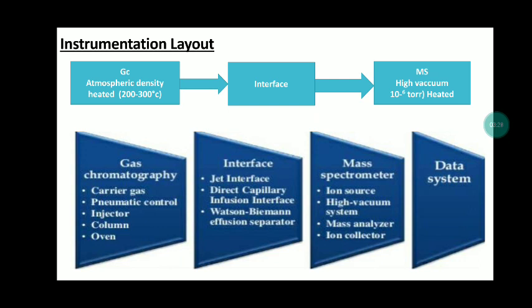Instrumentation of GCMS. This is a layout of the GCMS. The GC and MS systems are both heated at 200 to 300 degrees Celsius and both deal with compounds in the vapor state. The interface is a connection between GC and MS and plays an important role in GCMS. The pressure incompatibility problem between GC and MS is solved by inserting an interface, because MS operates under vacuum at 10 to the power of minus 6 torr, whereas GC operates at high pressure.